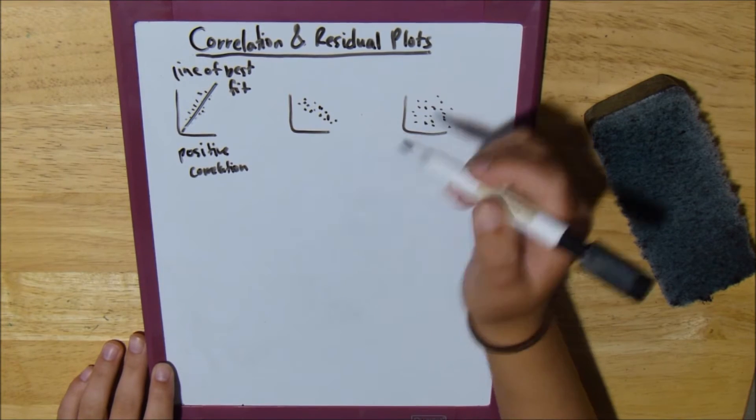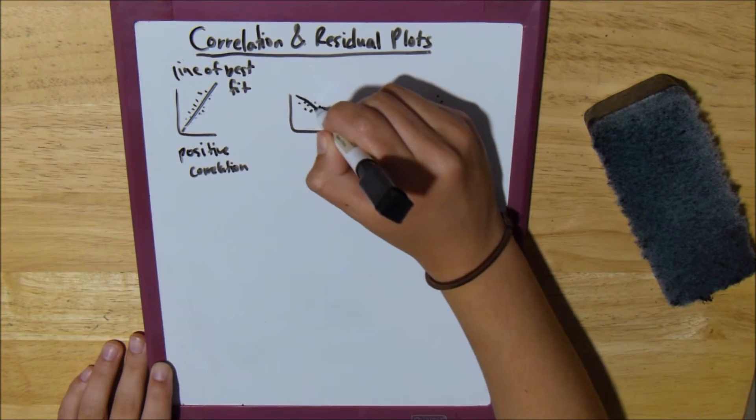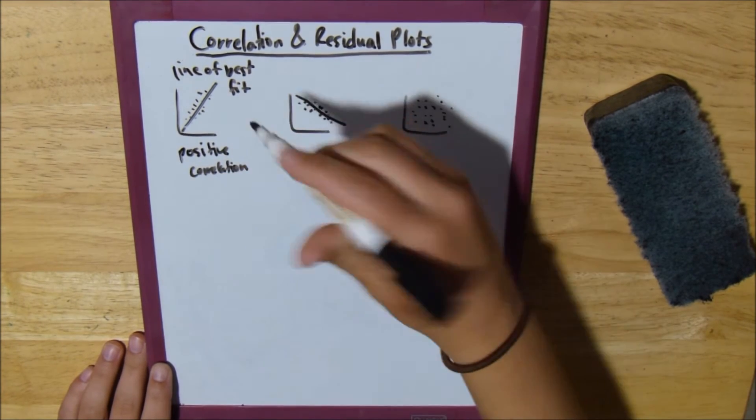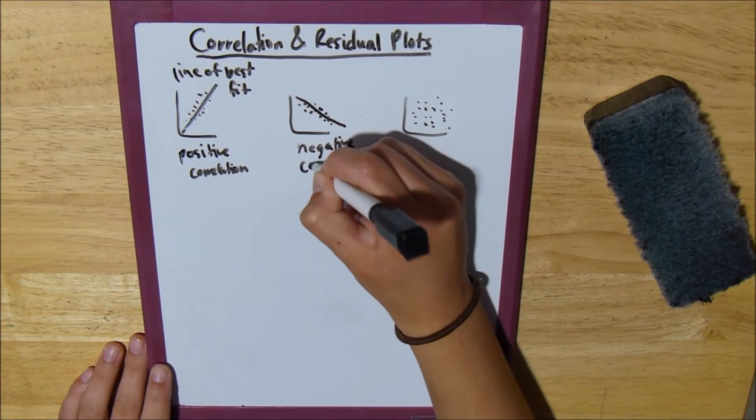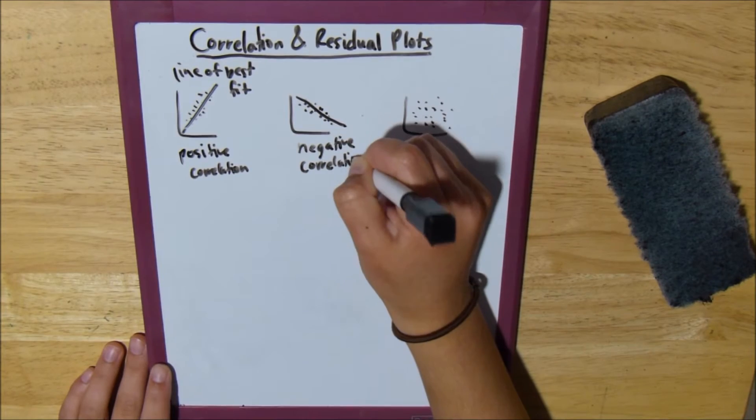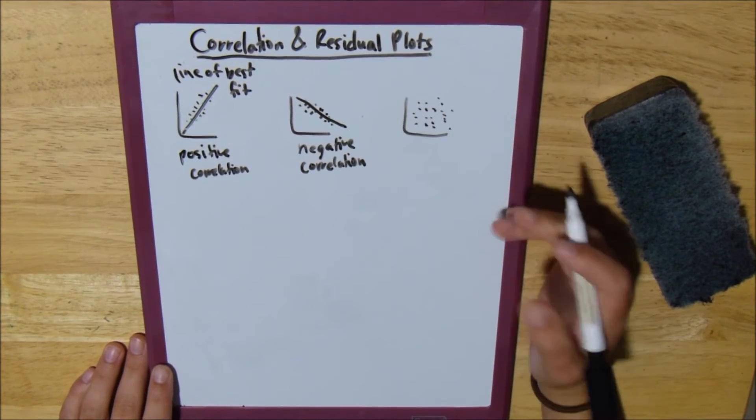Now, we have this graph where all the points seem to be going downwards in a negative way, a negative slope, a negative correlation.